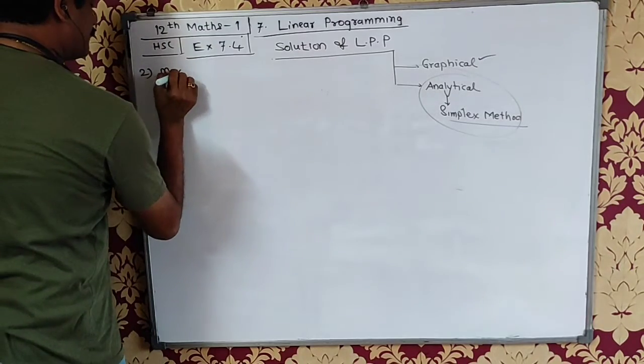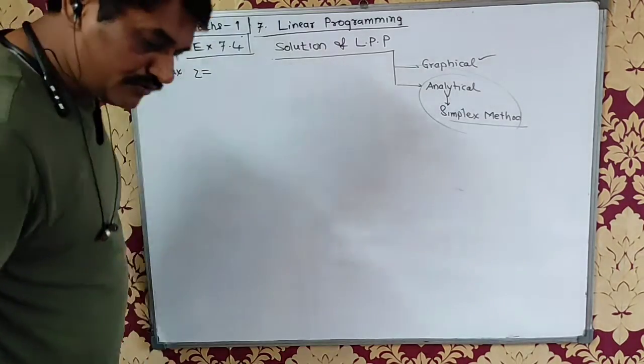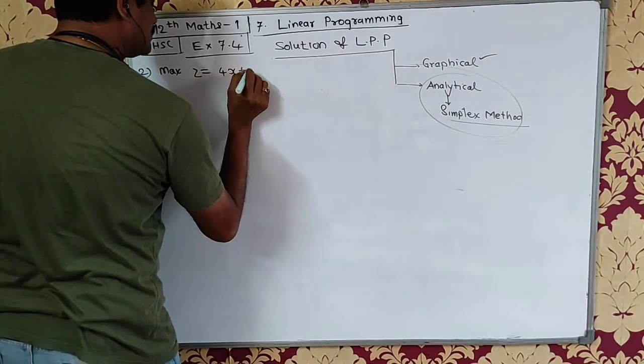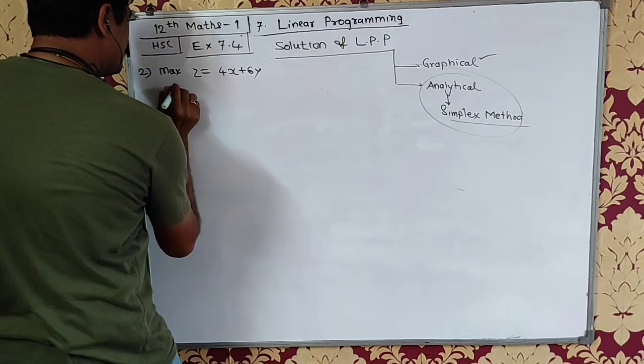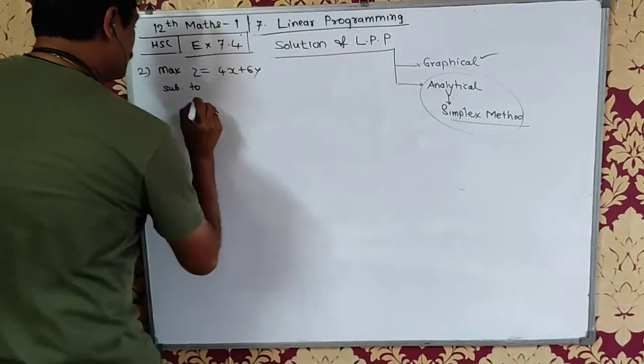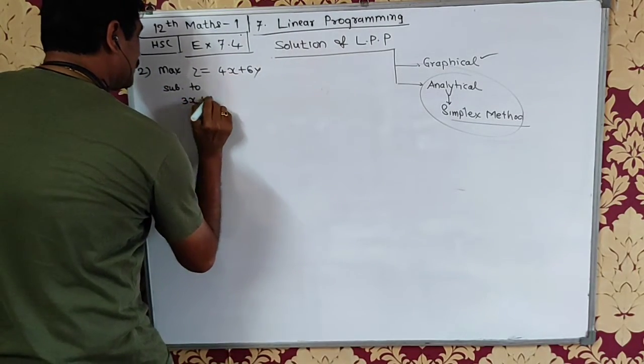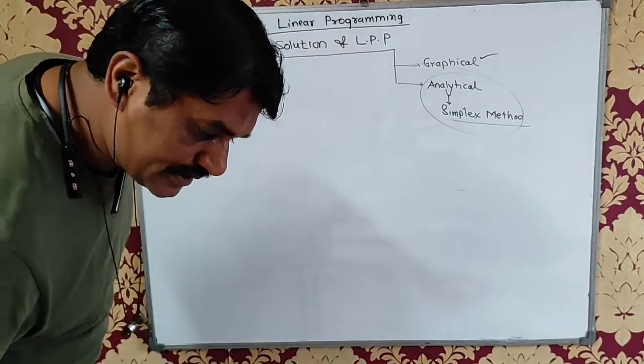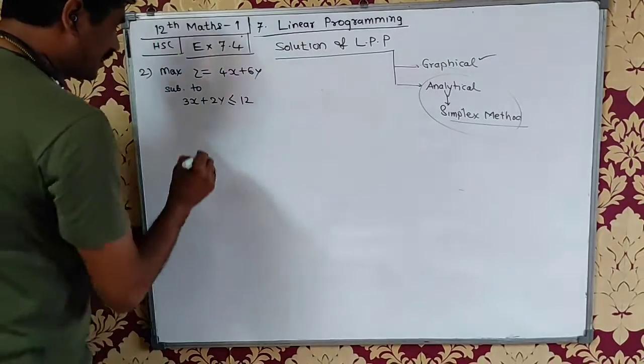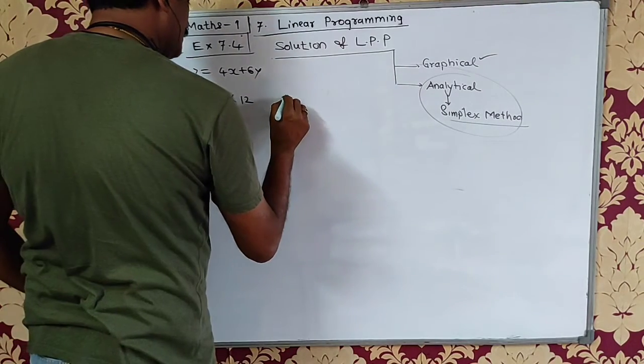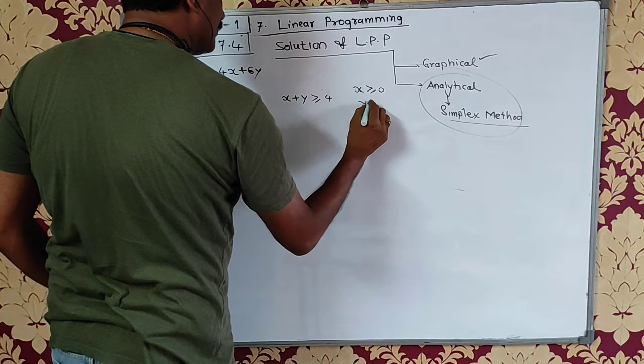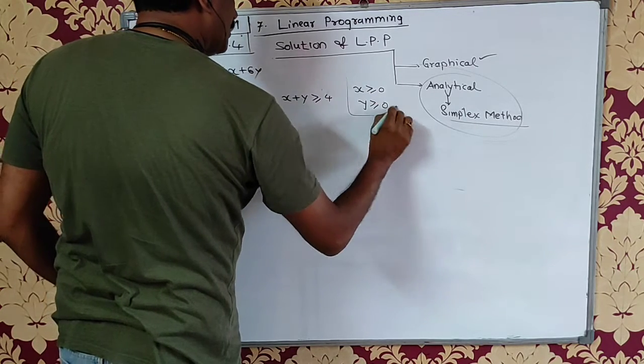Question number 2: Maximize z equals 4x plus 6y, subject to constraints 3x plus 2y less than or equal to 12, x plus y less than or equal to 4, and x, y greater than or equal to 0.